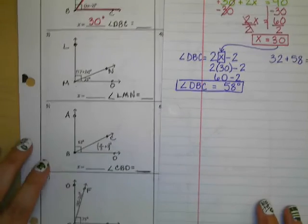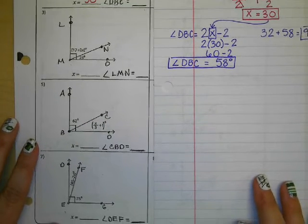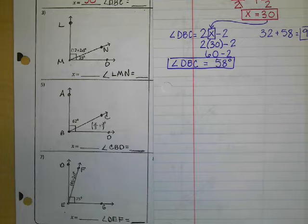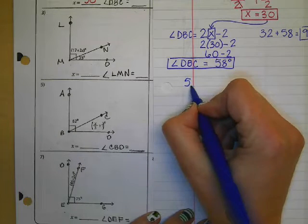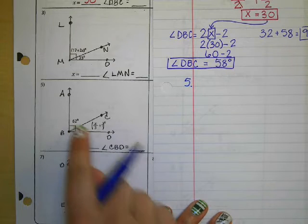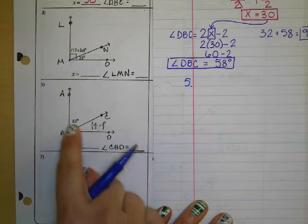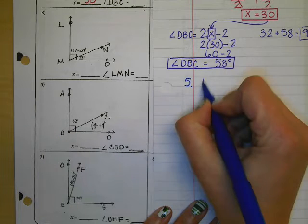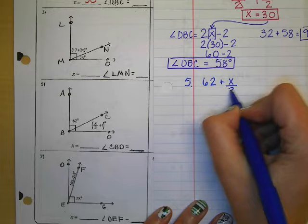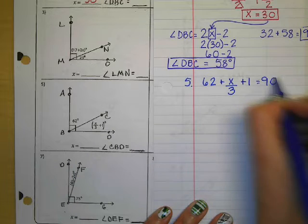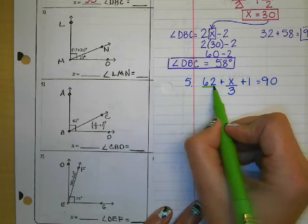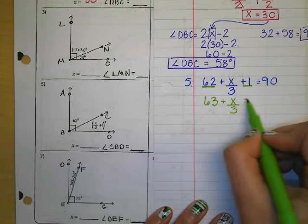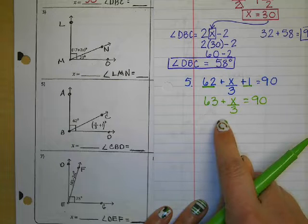Now let's go ahead and do one with a fraction — number 5. We have a fraction in here: x divided by 3. We're going to do the process the exact same way. Number 5 on the front page: we have 62 and x divided by 3 plus 1. We know it has to be equal to 90 degrees because of our little triangle here. So our equation is 62 plus x divided by 3 plus 1 equals 90. Just like in our last problem, we're going to combine our like terms, giving us 63 plus x over 3 equals 90.